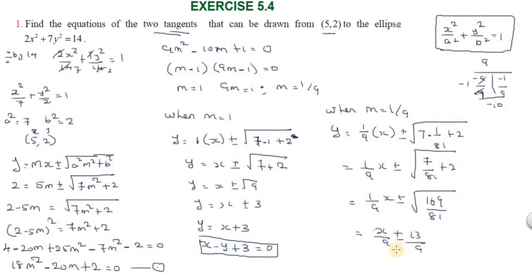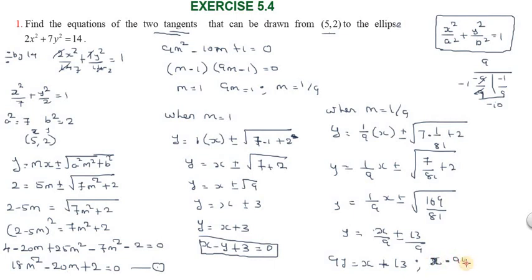For m = 1/9, substituting into the tangent equation gives 9y = x + 13. So the second tangent equation is x - 9y + 13 = 0. Thank you very much.